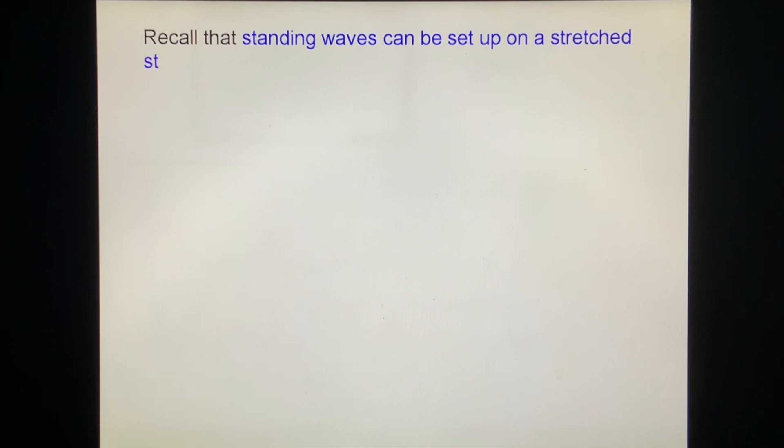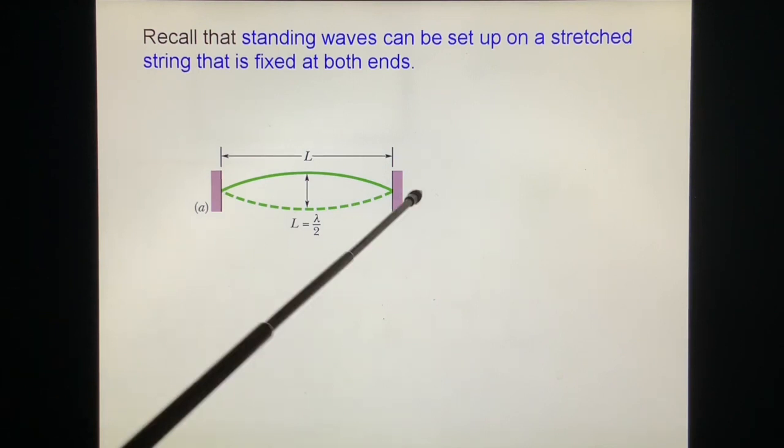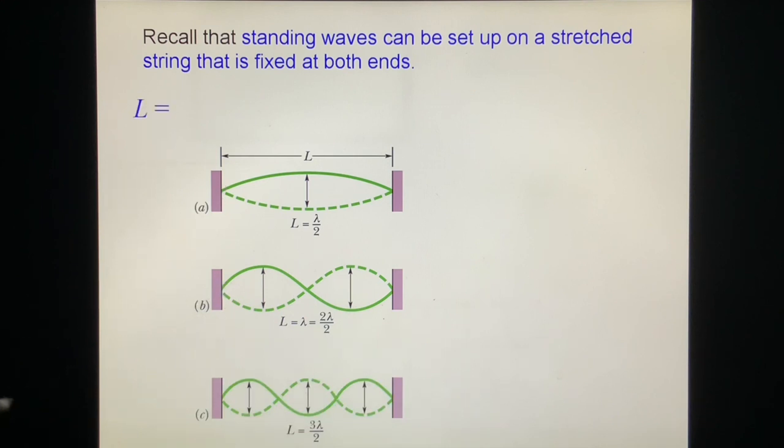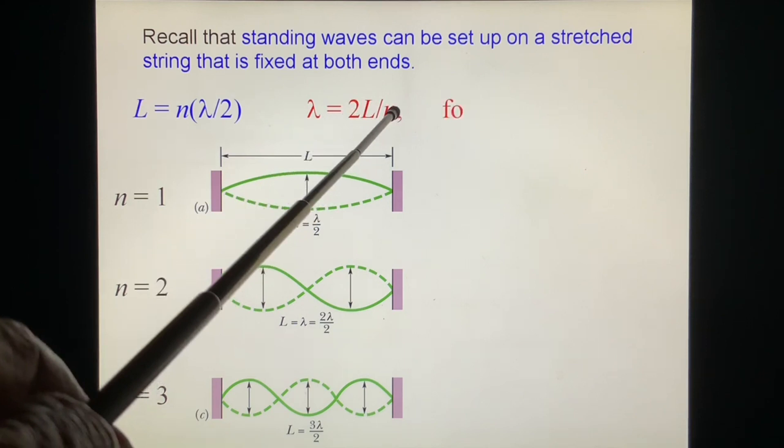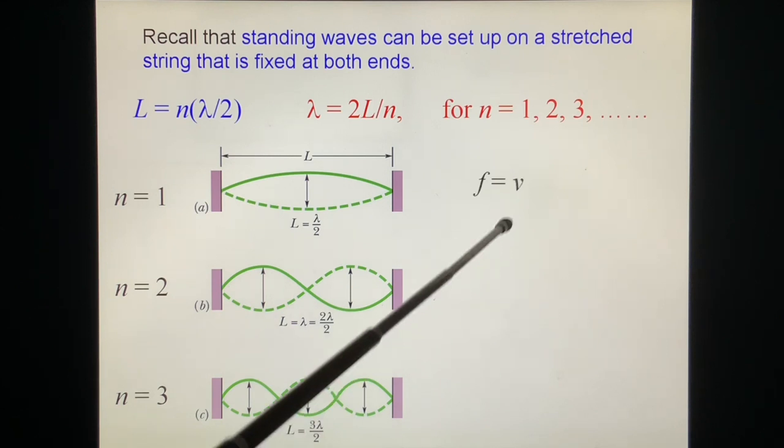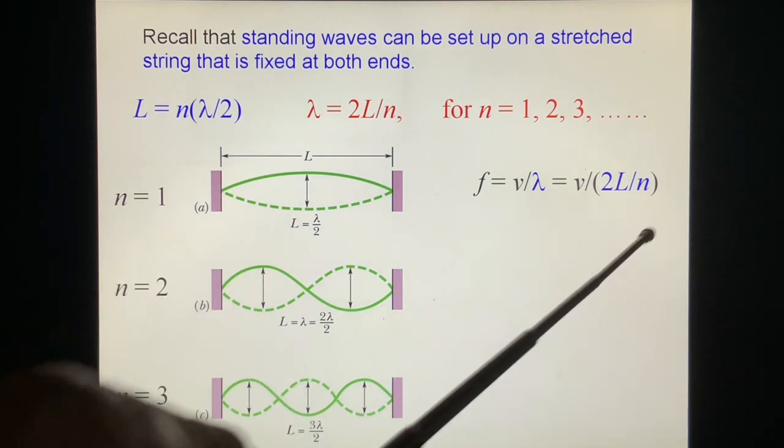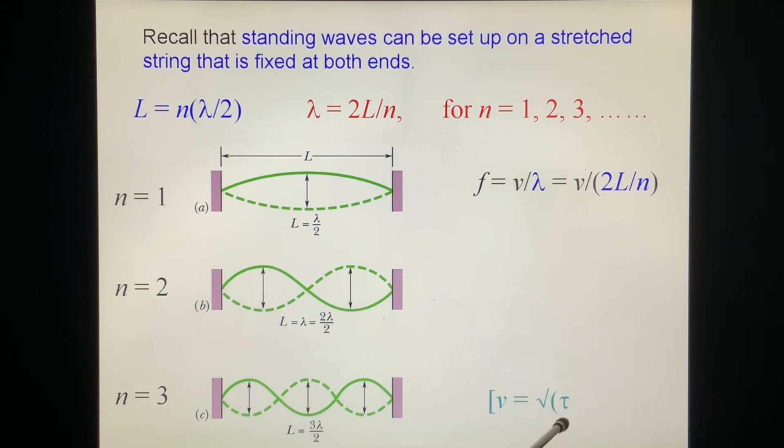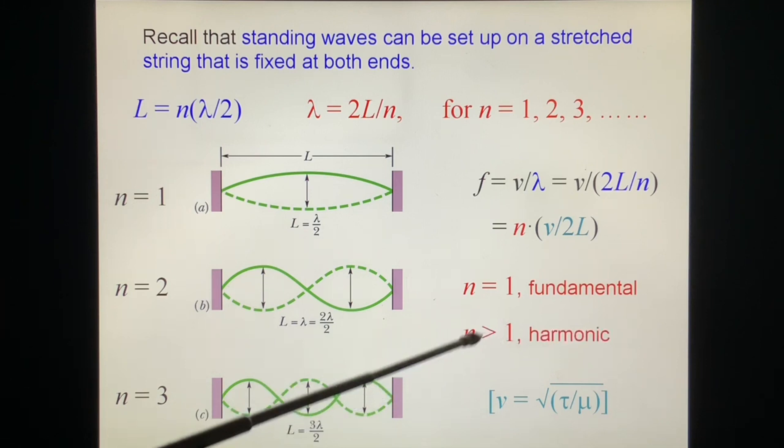Recall that standing waves can be set up on a stretched string that is fixed at both ends. Both ends are nodes because they cannot move. The distance L must be an integral number of half wavelengths. This is one half wavelength. This is two half wavelengths. This is three half wavelengths. So wavelength cannot be anything. It has to satisfy λ = 2L/N, where N is equal to 1, 2, 3, 4. And the frequency is equal to V over lambda. This lambda is a fixed number with N. The V is decided by the stretched string. V is equal to square root of τ over μ. So the frequency can be rewritten as N times V over 2L. When N is equal to 1, we call it a fundamental frequency. And larger than 1, 2, 3, 4 is a harmonic frequency.